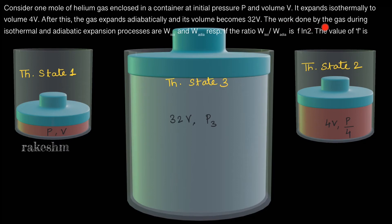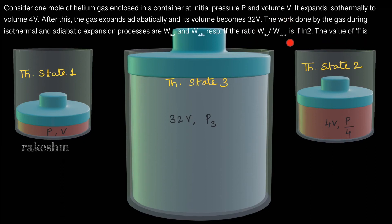The work done by the gas during isothermal and adiabatic expansion processes are W_isothermal and W_adiabatic respectively. The work done going from state 1 to state 2 is W_isothermal, and from state 2 to state 3 is W_adiabatic. If the ratio W_isothermal divided by W_adiabatic equals F·ln2, we need to find the value of F.